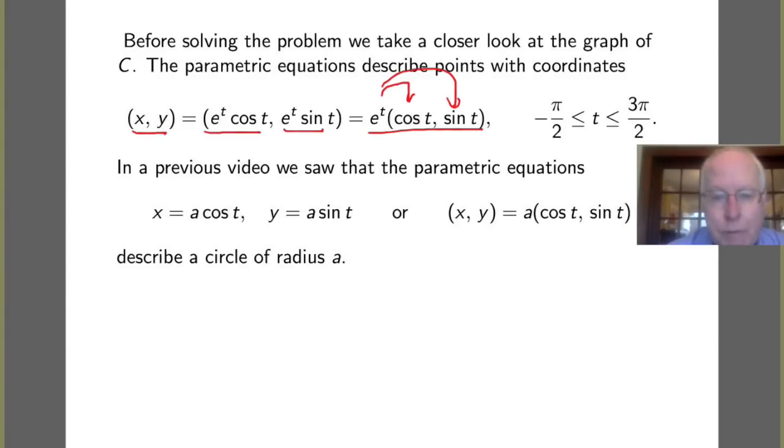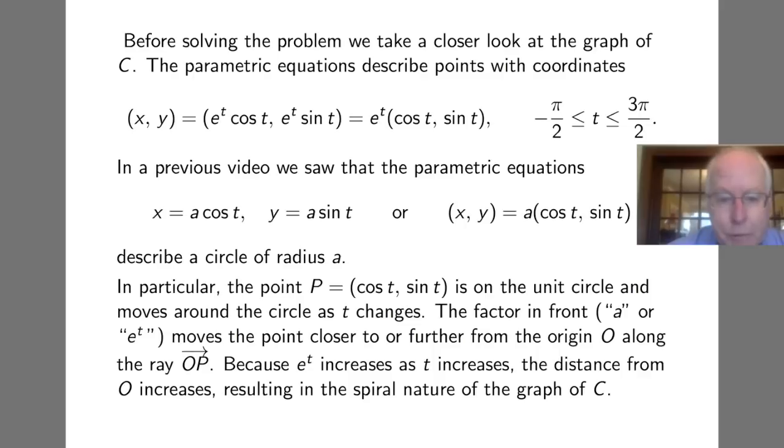In a previous video, our introduction to parametric equations, we saw that the equations x = a cos t, y = a sin t describe a circle of radius a centered at the origin. Remember that the point P with coordinates (cos t, sin t) is on the unit circle and moves around the circle as t changes.